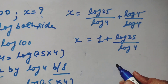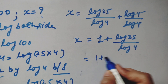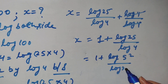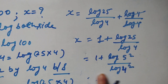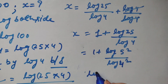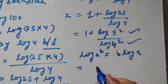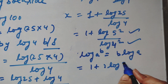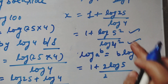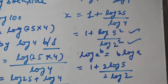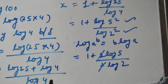This is the x value but it is not the final value. We will split further: log 25 is log of 5 squared, and log 4 is log of 2 squared. Again using the log concept — if we have log a power b, then b comes in front — so this becomes 1 plus 2 log 5 over 2 log 2. Note: I mistakenly wrote 4 squared earlier; it is 2 squared. The 2s cancel.